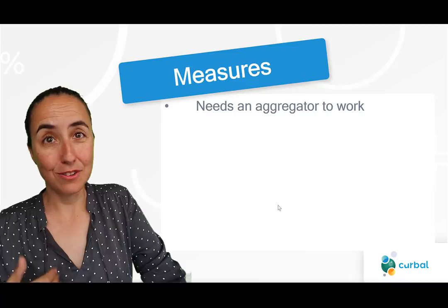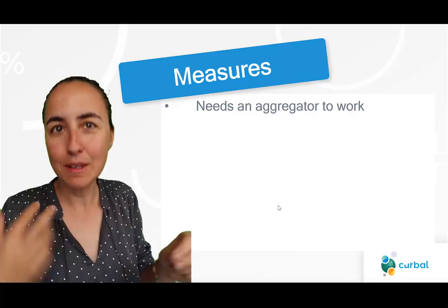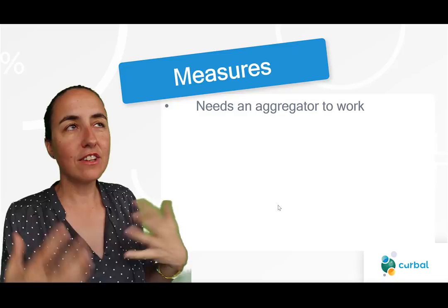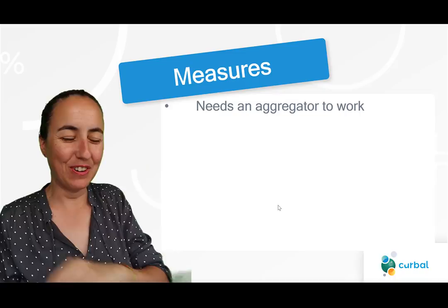Measures need an aggregator — you need to wrap your measure in a function: a SUM, a COUNT, a whatever. There is something called IntelliSense, which I'll show you, that will help you not make that mistake. It gets a little bit annoying, but we'll go through that in a second.